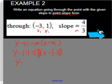So we have y minus 1 equals 4 over 3 times x plus 3. So this is that equation in point slope form.